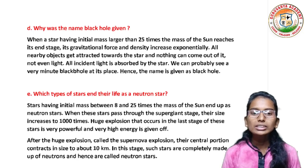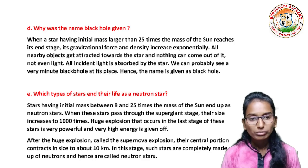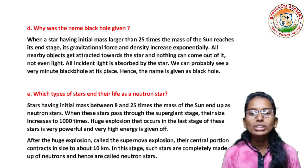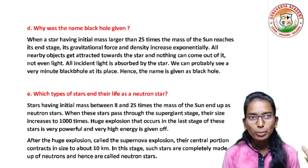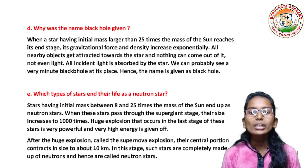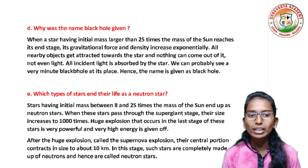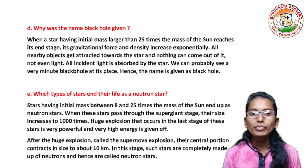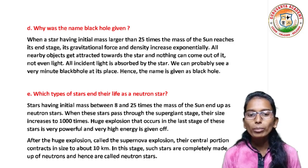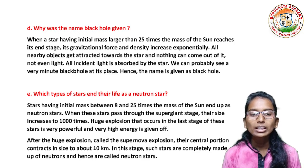Why was the name black hole given? Answer: when a star having initial mass larger than 25 times the mass of the sun reaches its end stage, its gravitational force and density increase exponentially. All the nearby objects get attracted towards the star and nothing can come out of it — not even light. All incident light is absorbed by the star. We can see a very dark region at its place, hence the name black hole.